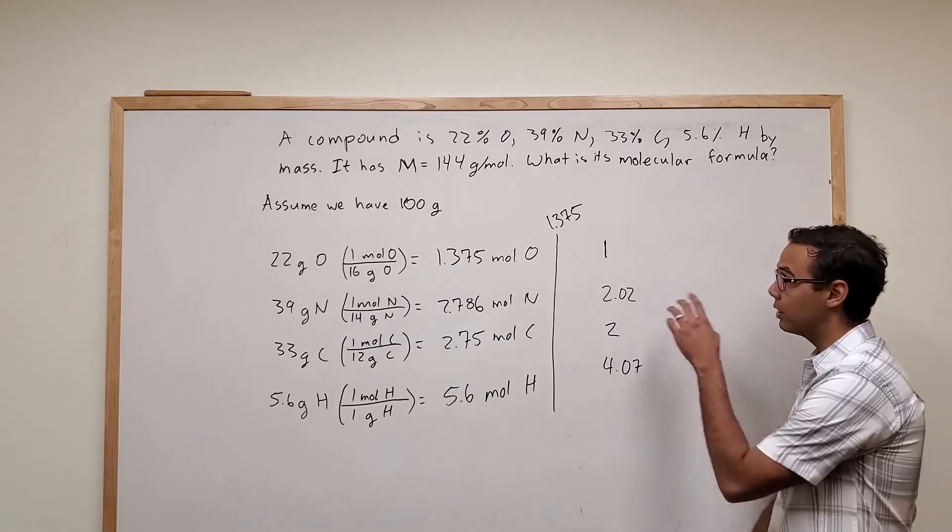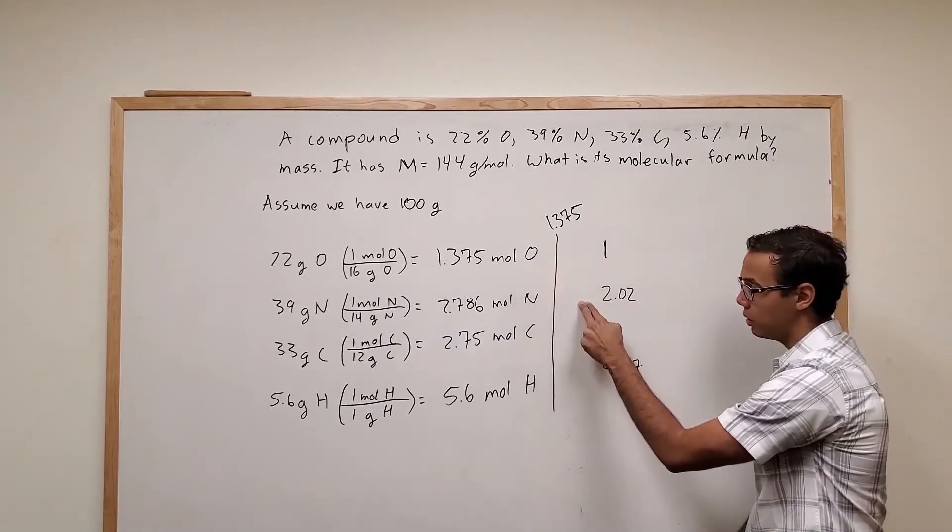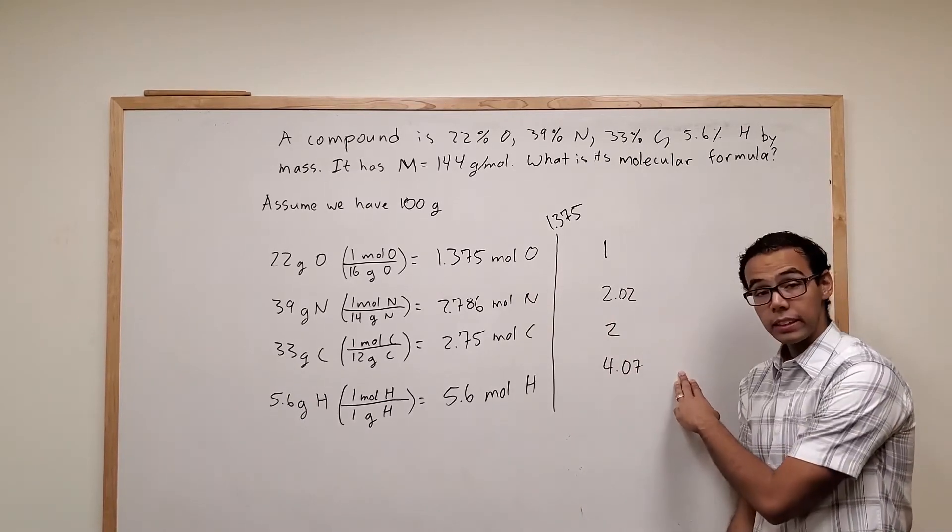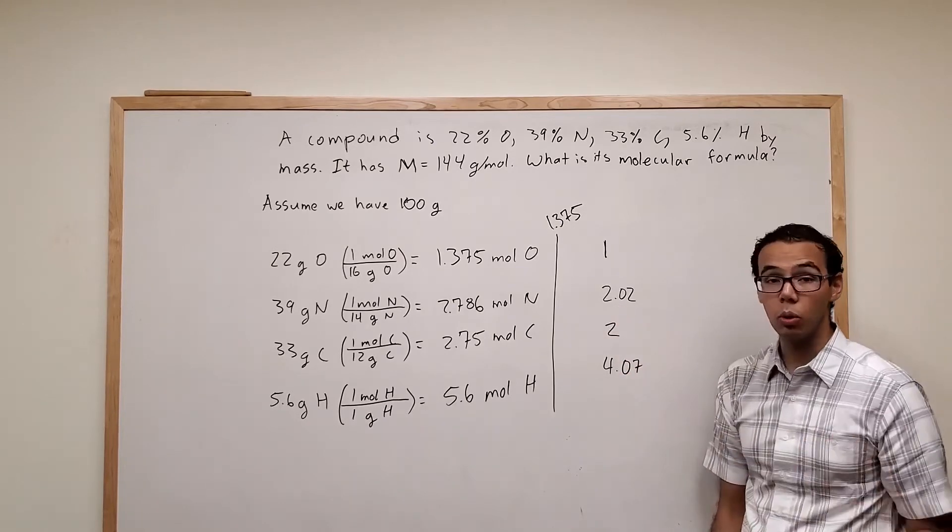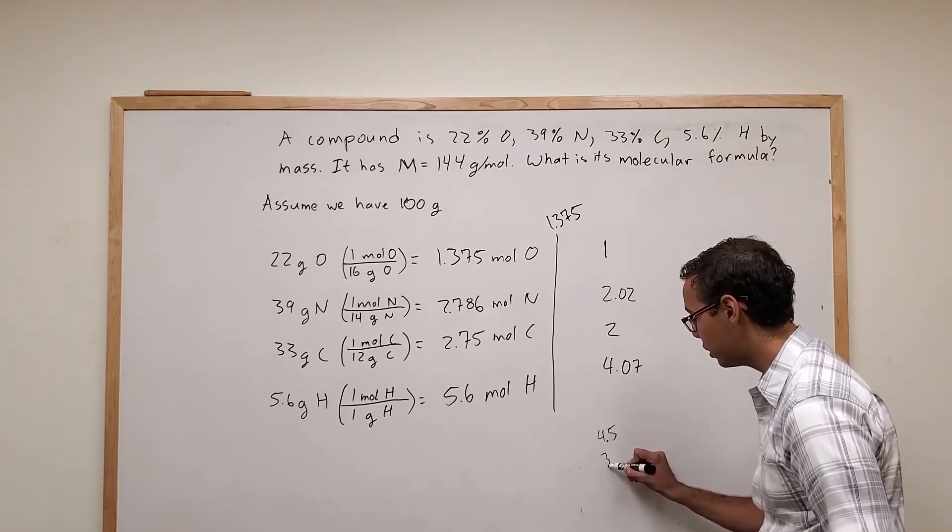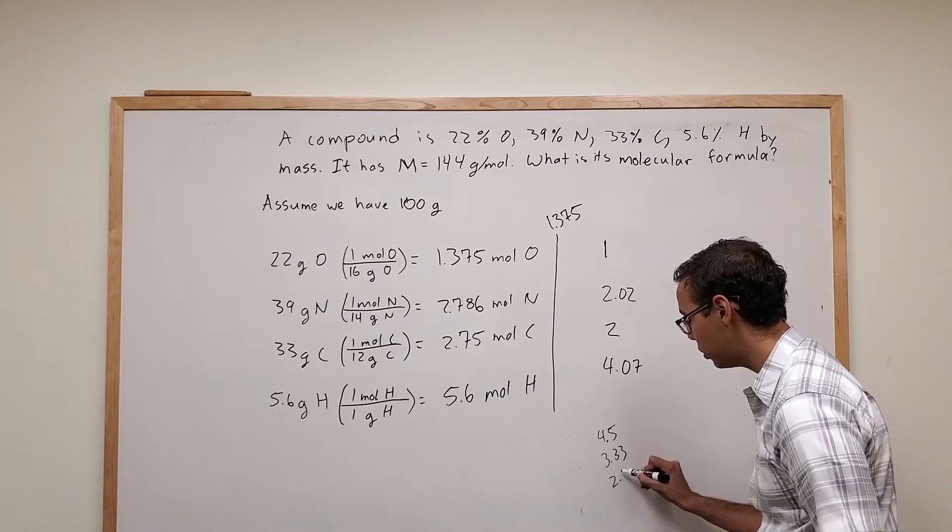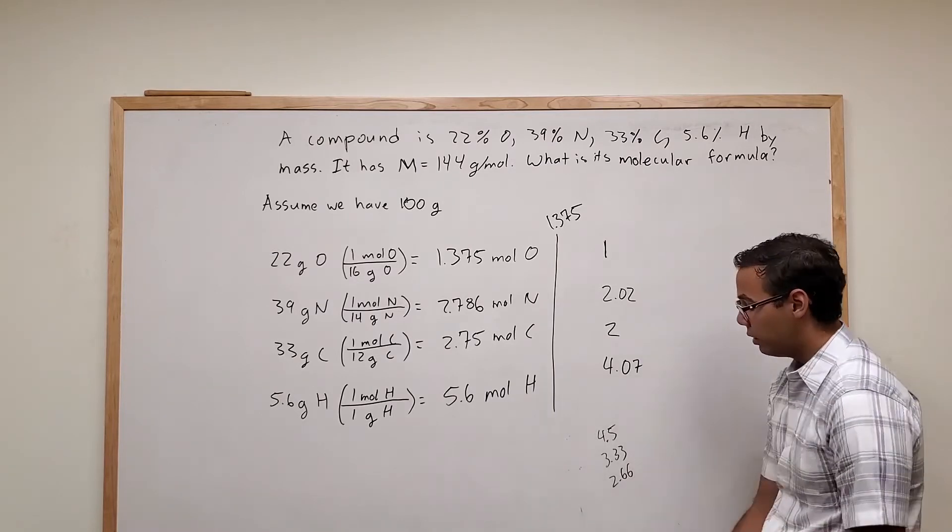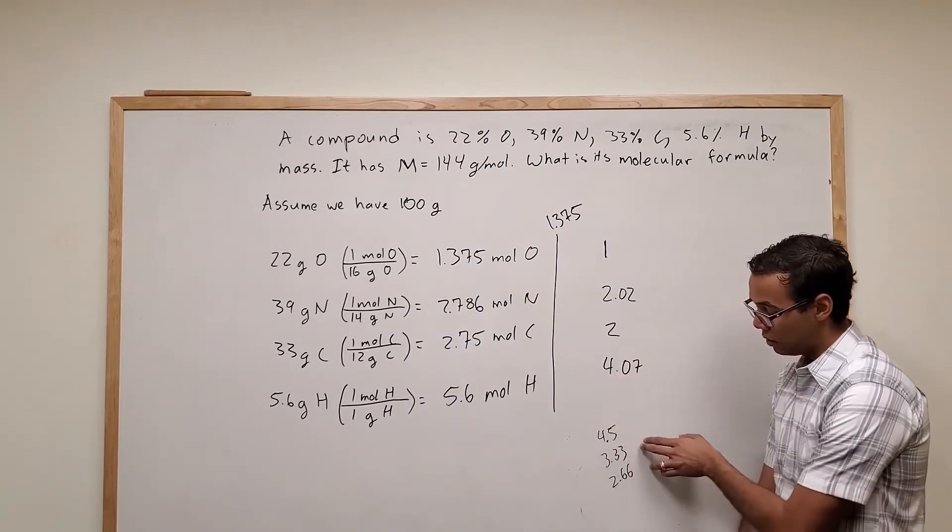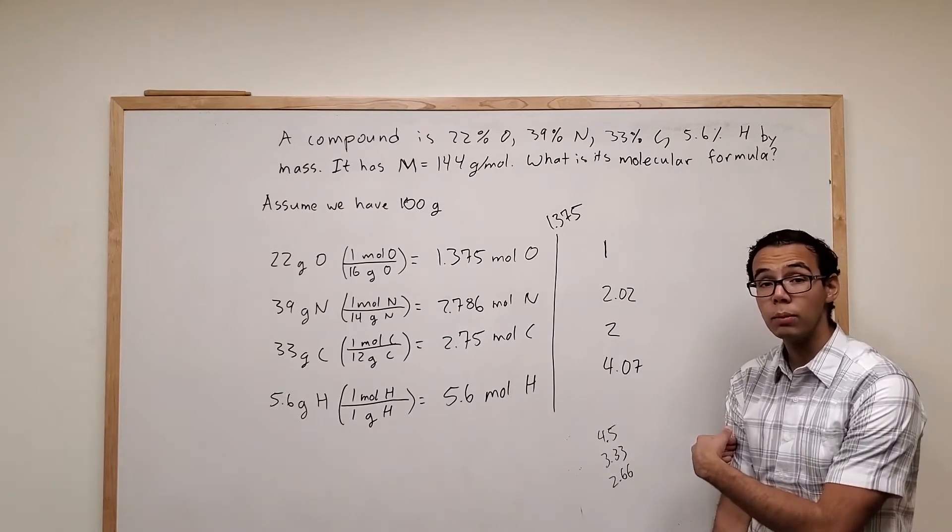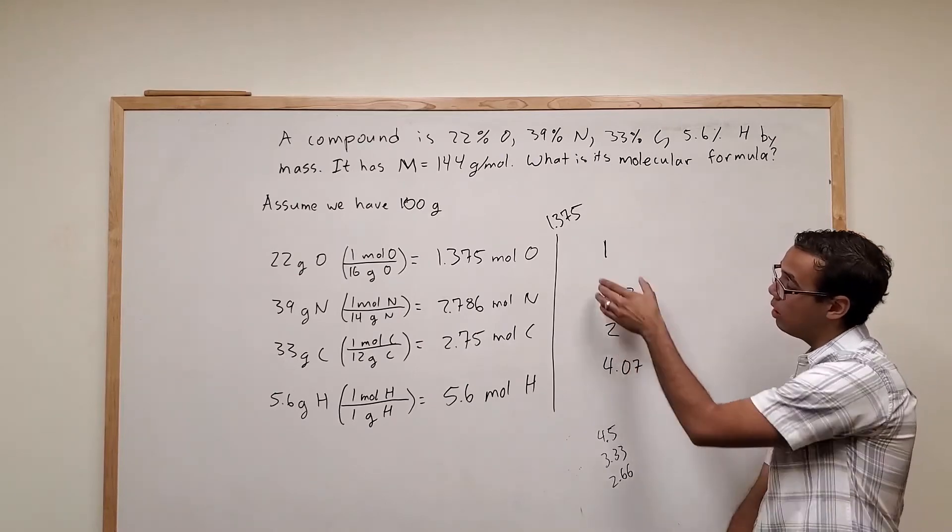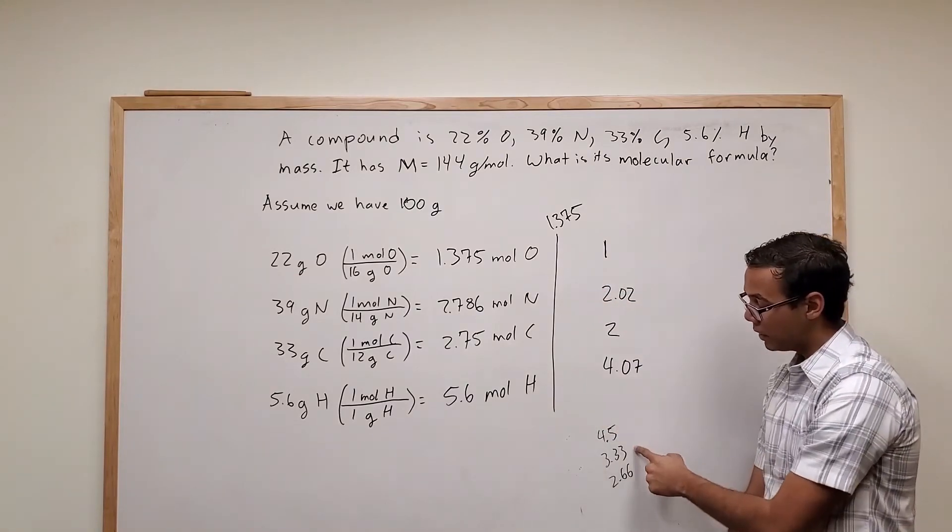Okay, so remember these are just the ratios. So for every one oxygen we have 2 nitrogens, 2 carbons, 4 hydrogens. And something key to remember here is this example came out very nicely, where all of these decimals are very close to a whole number. But if we had something like 4.5 or 3.33 or 2.66, these ones are far enough from a whole number and easily recognizable as something that you should probably do another step. And in this step you just multiply all four of your values here by a number to get rid of these decimals.